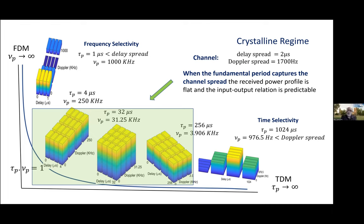And what we do is we plot the average power of the received discrete delay-Doppler domain signal for different values of tau_p. And, of course, nu_p on the hyperbola.